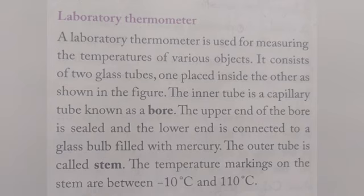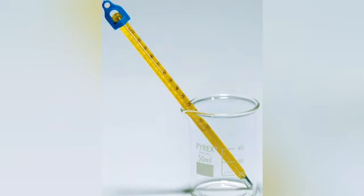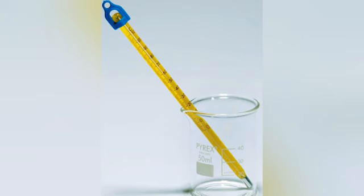A laboratory thermometer is used for measuring the temperature of various objects in the laboratory for conducting scientific experiments. In the picture you can see a laboratory thermometer. It consists of two glass tubes, one placed inside the other. The inner tube is a capillary tube also known as a bore. The upper end of the bore is sealed and the lower end is connected to a glass bulb filled with mercury. The outer tube is called the stem. The temperature markings on this laboratory thermometer range from minus 10 degree Celsius to 110 degree Celsius.